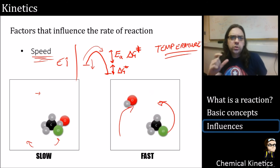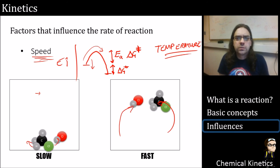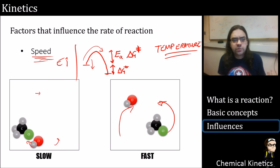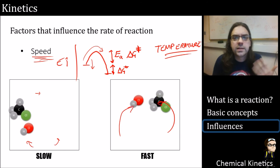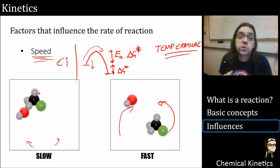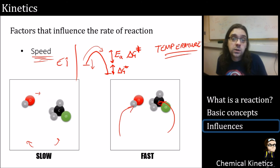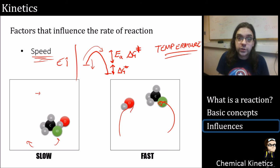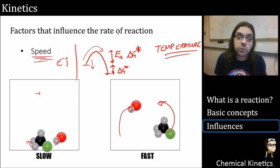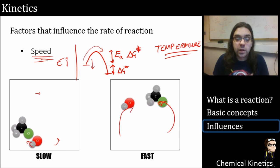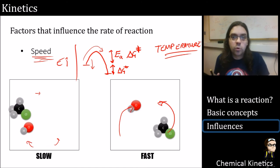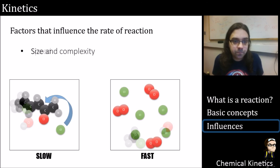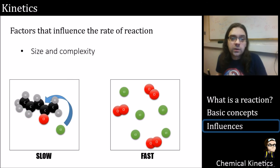When we cover the Maxwell-Boltzmann distribution, we'll get a more concrete understanding of the relationship between molecular speed and temperature. For now, just know that temperature in the lab translates into molecules moving faster — they collide with more energy, hop over the activation barrier, and react more efficiently.